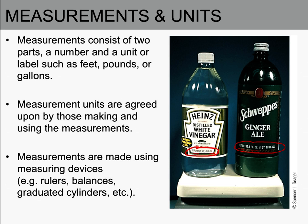Measurements are made using measuring devices such as rulers, balances, and graduated cylinders. We saw a balance in a previous video. A graduated cylinder has a base and a tall cylinder with graduation marks on it, and we use it to measure the volume of a liquid.